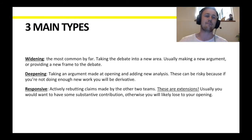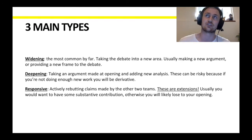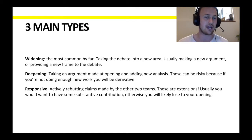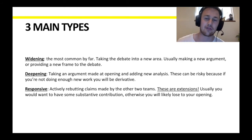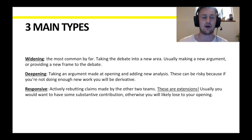The third main type are responsive extensions — where you actively rebut claims made by the other two teams. These are still extensions. Some less experienced judges might think this is just rebuttal, but that's not the case. Getting rid of other teams' analysis is valuable to your bench and should be credited as such. That said, you usually do want some other substantive contribution alongside it, so having multiple parts to your extension is particularly important if you're running a responsive extension — otherwise you'll very likely lose to your opening.